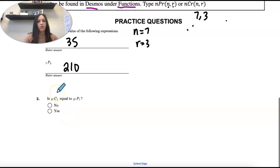So number two is asking if the combination of 37 choose 1 and then the permutation of 37 choose 1 are equal.